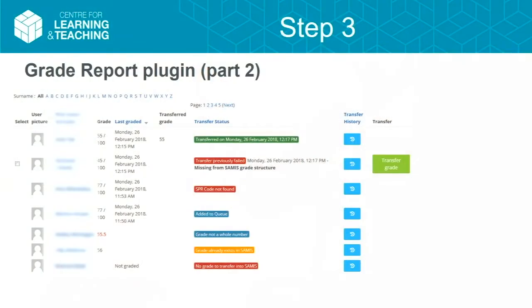The next part of the page is very similar to how a grade report looks: user details, the grade given, when they were last graded by an academic, and if they have been transferred we confirm that by showing the transferred grade. We have several outcome codes for the transfer stage. There's also a history button to see what has been done with a particular grade, and you can select individual grades via checkboxes or do one at a time.